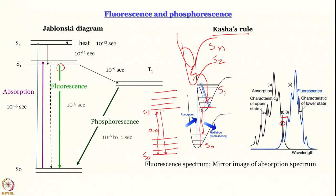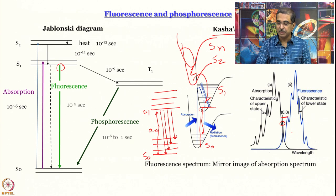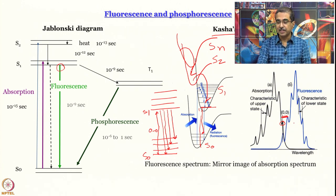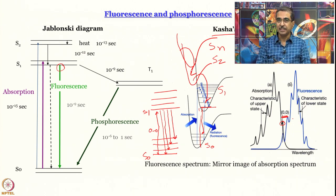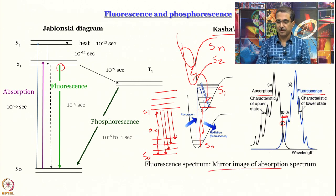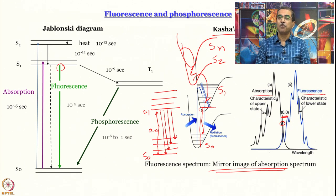The Franck-Condon factor from 0 to 3' or from 0' to 3 are more or less the same. That is why the fluorescence spectrum is expected to be a mirror image of the absorption spectrum — this is called the mirror image rule, arising out of Kasha's rule that the downward transition originates from the 0' level of S1. There are exceptions to this mirror image rule, and one very notable exception is called the azulene anomaly.